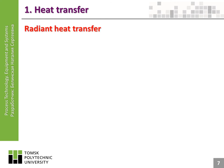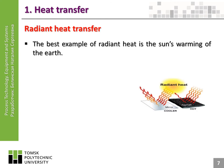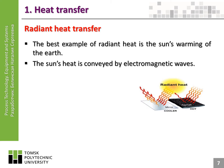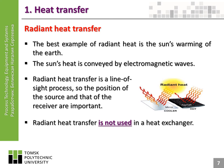Radiant heat transfer. The best example of radiant heat is the Sun's warming of the Earth. The Sun's heat is conveyed by electromagnetic waves. Radiant heat transfer is a line-of-sight process, so the position of the source and that of the receiver are important. Radiant heat transfer is not used in a heat exchanger.